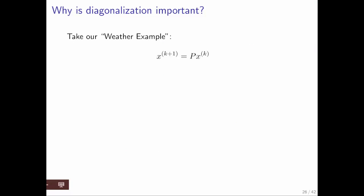Why is diagonalization so important? Well let's go back to our weather example. There we had that some transition matrix took the state at time k into a state vector at time k plus 1.